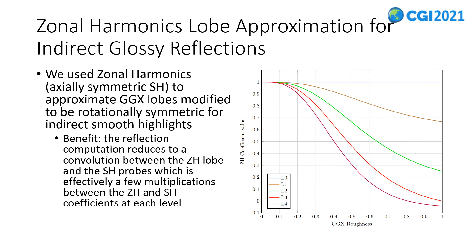Our final contribution was the use of zonal harmonics to approximate GGX materials for indirect glossy reflections. This means that the BRDF of GGX materials, namely GGX lobes, are modified and fitted to a corresponding rotationally symmetric spherical harmonic basis when calculating indirect lighting. The benefit is that the calculation of the reflection lighting reduces to a convolution between the ZH GGX lobe and the interpolated SH probes, yielding only a few multiplications on each spherical harmonics coefficient level. In the right side image, 1024 values are used to fit ZH coefficients to a corresponding GGX lobe, yielding a detailed enough lookup table for all possible GGX materials. It should be emphasized that this scheme was only used for indirect glossy highlights, and direct glossy and sharp highlights can still be produced by other methods.